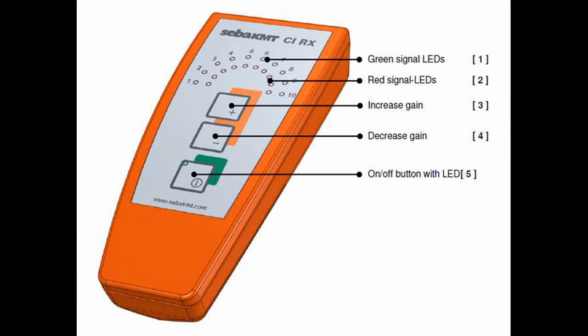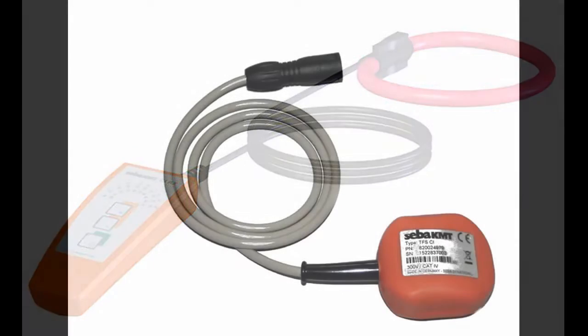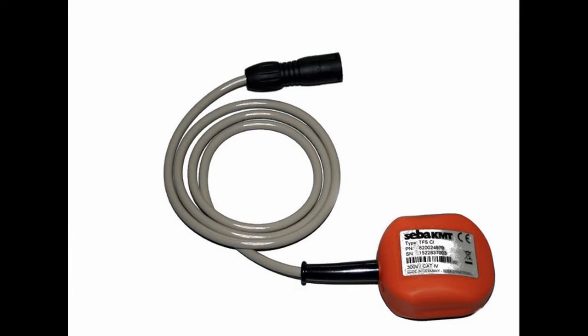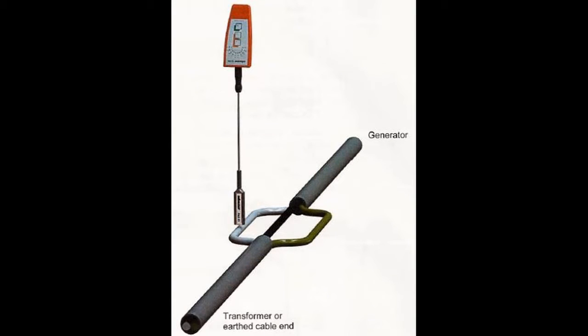The receiver, CI-RX, can be connected to up to four different types of sensor to suit many purposes. The standard supplied sensor is a 230mm flex clamp for decoupling the identification signal. A smaller 110mm flex clamp is also available as an option.